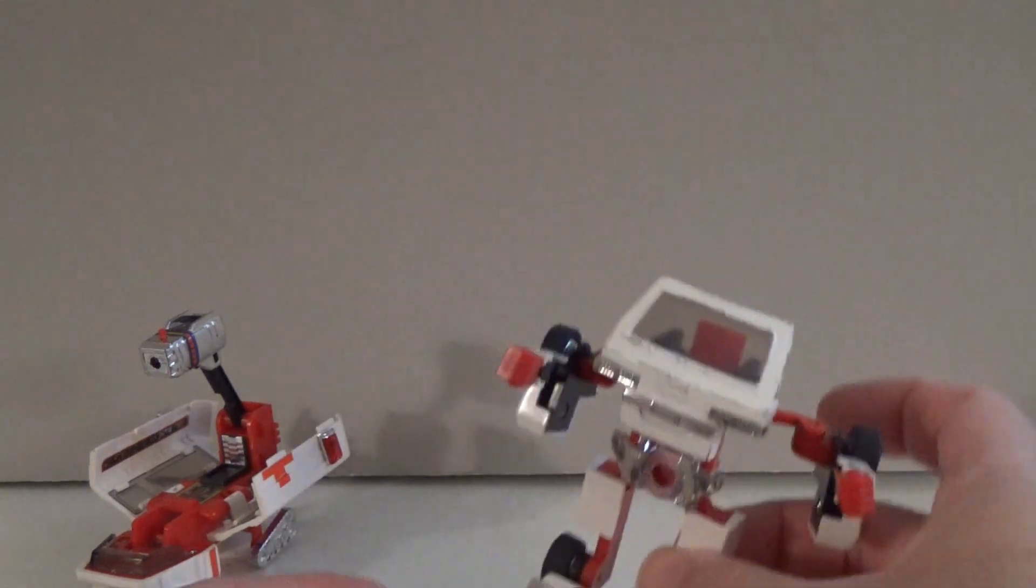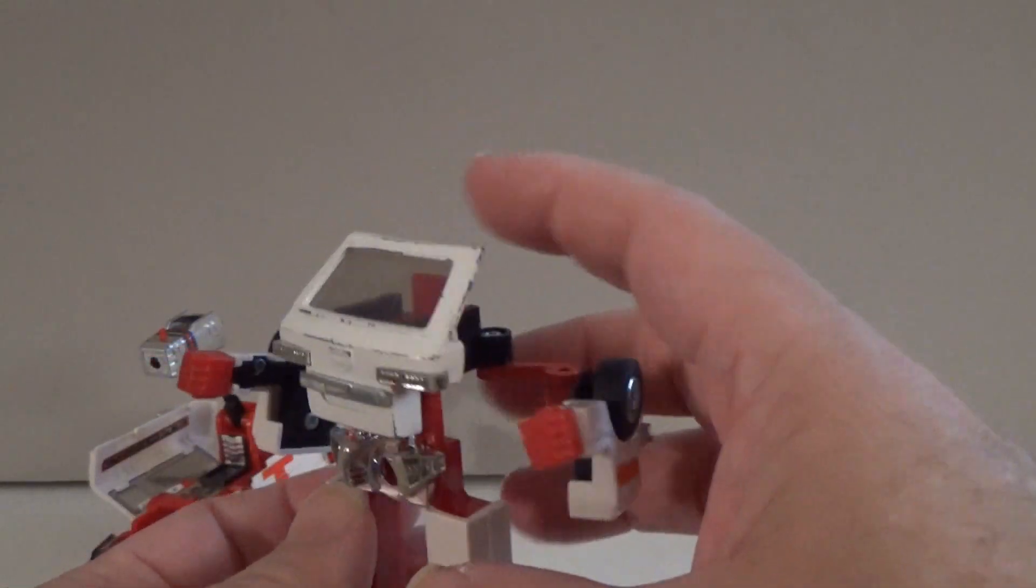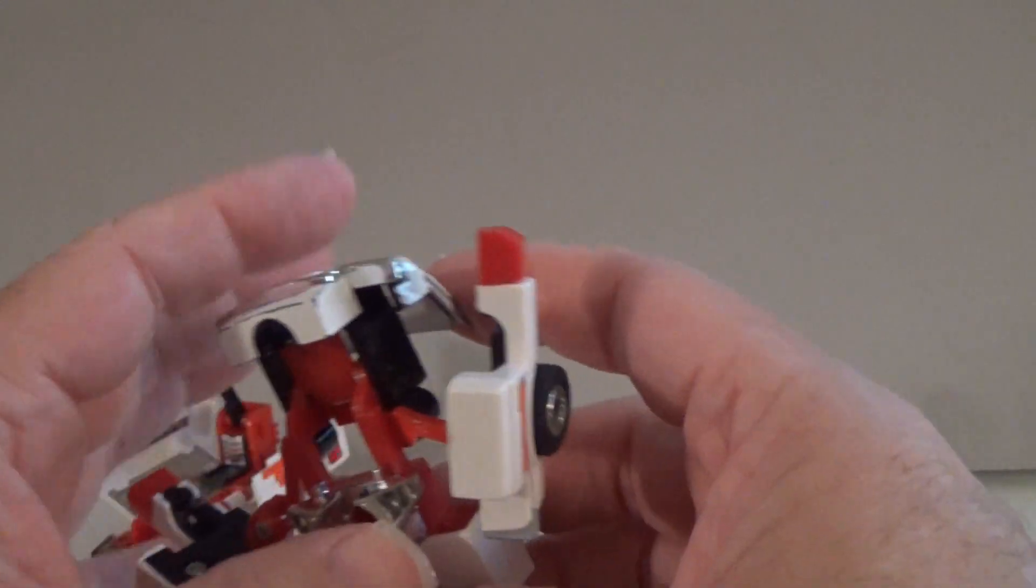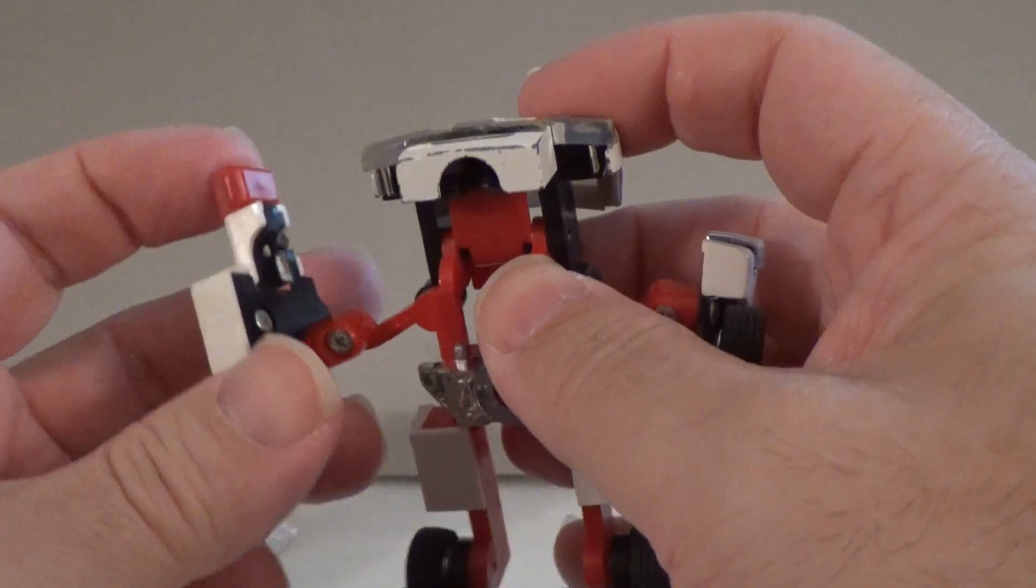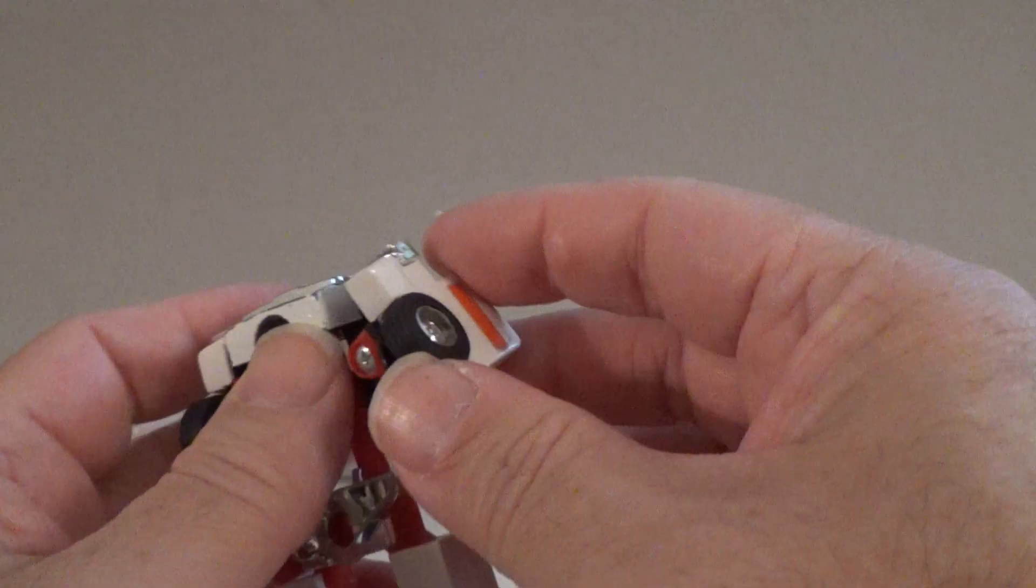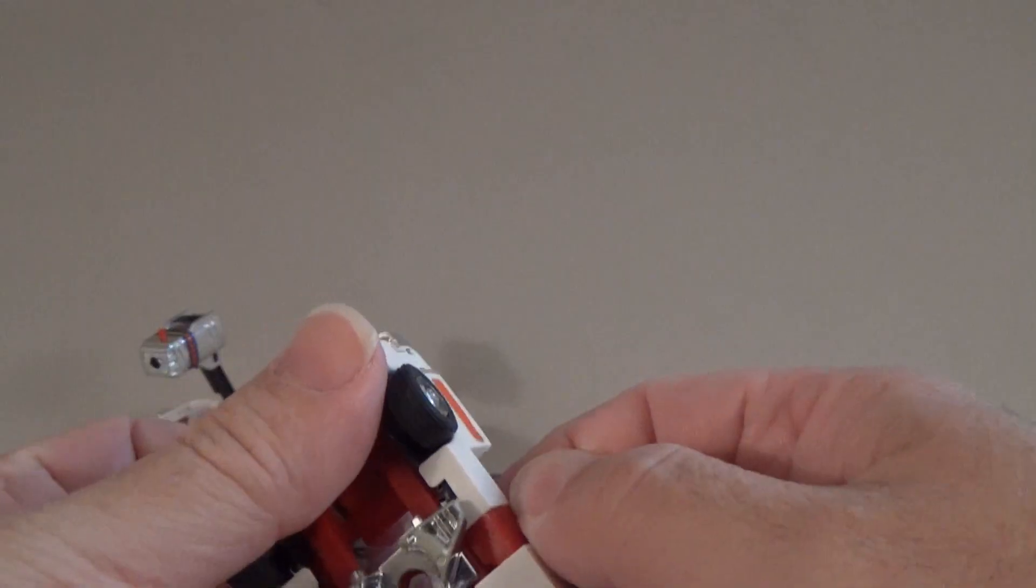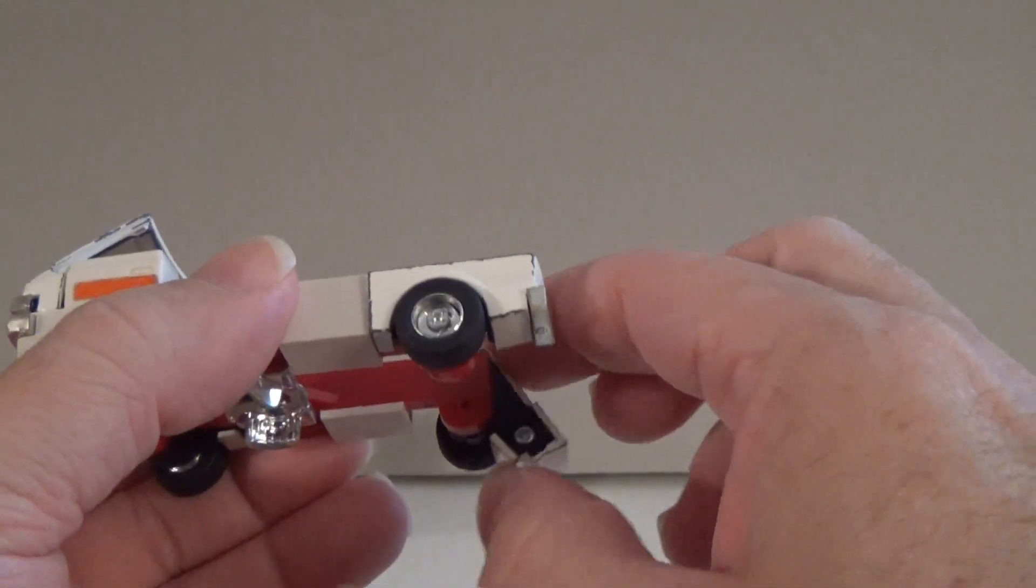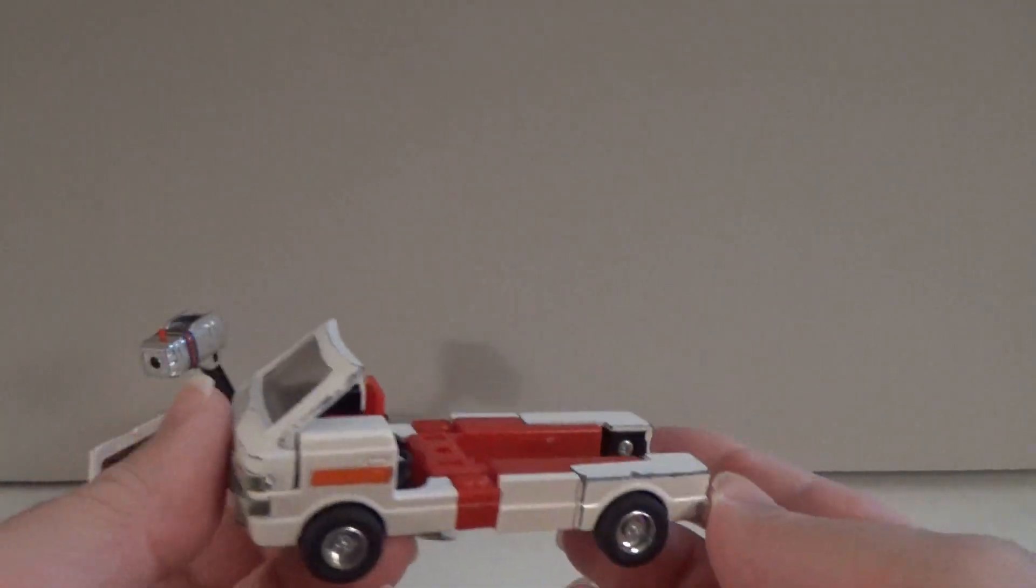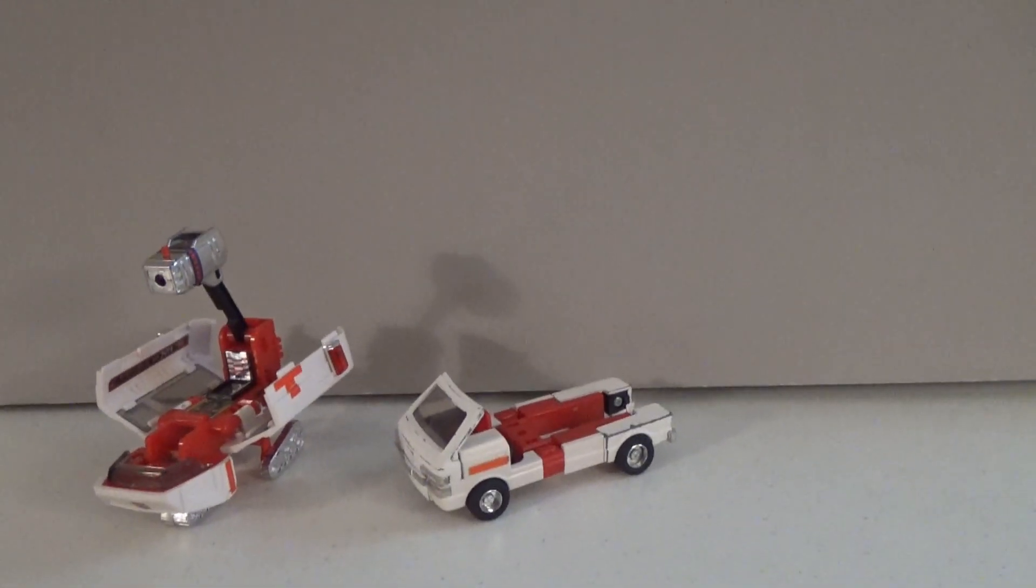Alright, to transform Ratchet, like many of the Generation 1 toys, it's a rather simple affair. We'll start with the robot first. You'll fold up the chest like so. We can rotate the arms so that the wheels are now facing the bottom. And then they just fold in to help hold the windscreen in place. And then we come down here to his feet and fold them backwards. And that gets the lower portion of the vehicle ready.